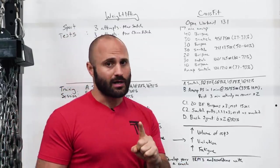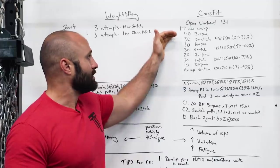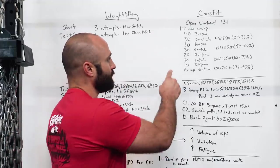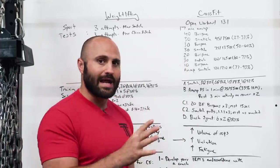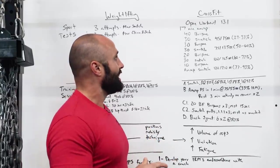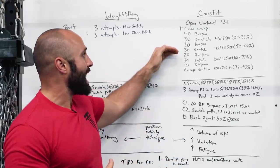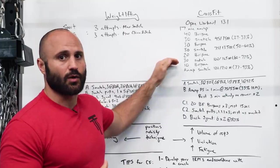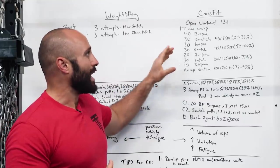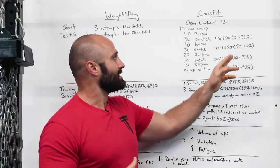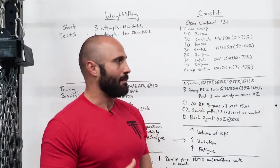In one test in CrossFit, you could potentially have to do, let's say most people are finishing somewhere around here if they're intermediate to advanced trainees. That means you could be potentially doing 90 burpees and 90 snatches over the course of 17 minutes with the weight ranges being anywhere from 27 to 73% of your one rep max.